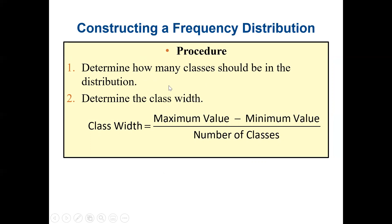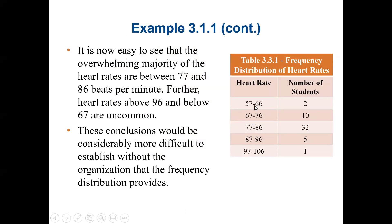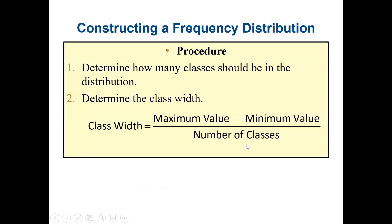Most of the time we are told not to have more than seven classes. After we know the number of classes, we can determine the class width. You can see here the class widths are the same: 57 to 66 gives 9, 67 to 76 is also 9, and 77 to 86 is also 9. The class width must be the same.